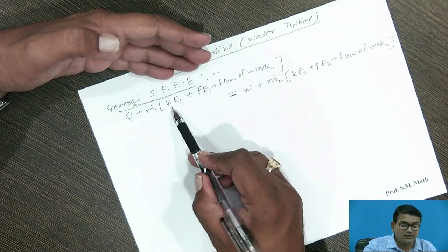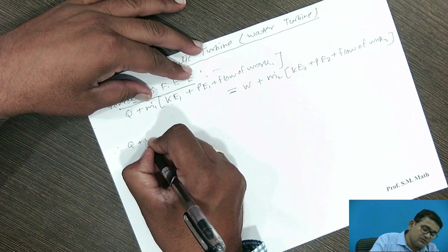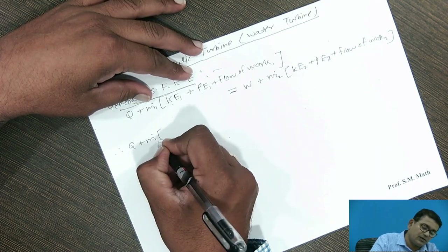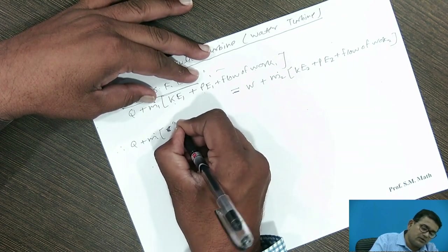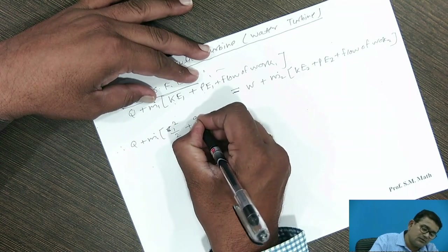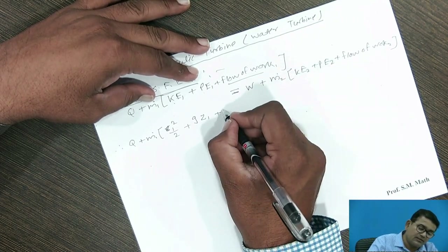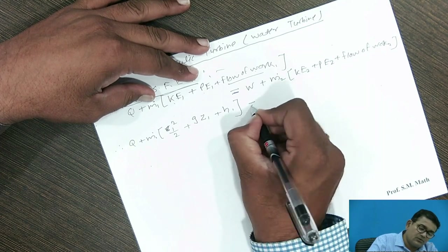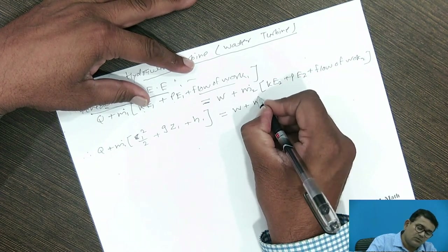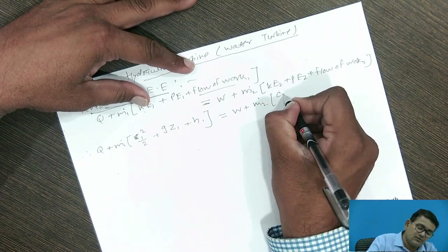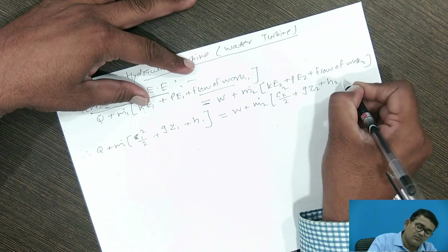First, put the values of kinetic energy, potential energy, and flow work. Therefore, the formula is: Q equals m1 times bracket — kinetic energy C1 squared over 2 plus potential energy gz1 plus flow work, which is enthalpy H1 — equals W plus m2 times bracket — kinetic energy C2 squared over 2 plus potential energy gz2 plus enthalpy H2.